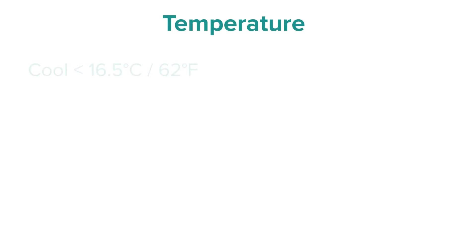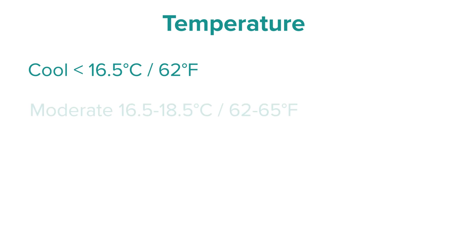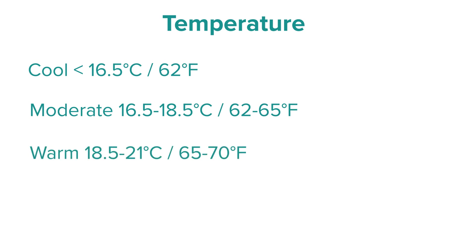The temperature range in which grape vines are happiest and thriving is between 16 and 22 degrees Celsius. This can be further broken down into climate classifications: a cool climate has an average growing temperature below 16.5°C, a moderate climate between 16.5 and 18.5°C, a warmer climate between 18.5 and 21°C, and a hot climate above 21°C.